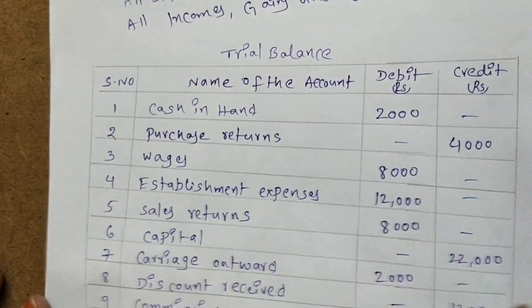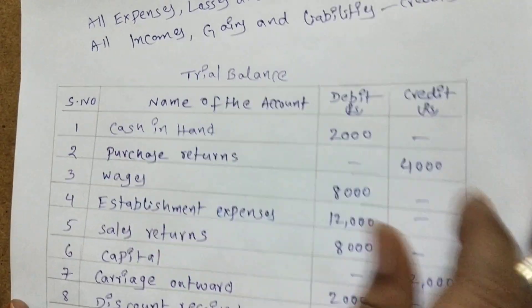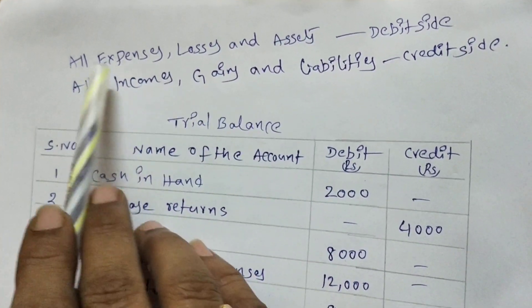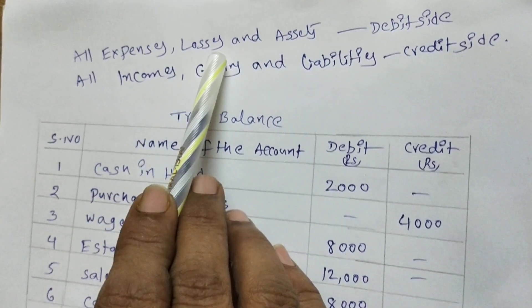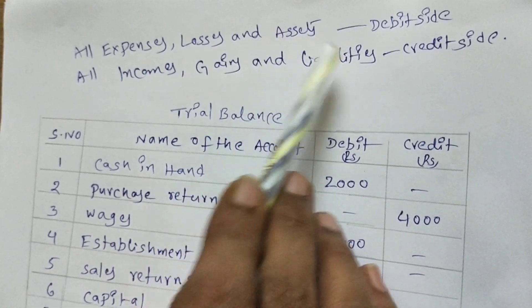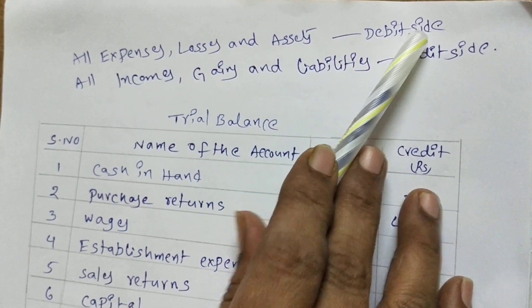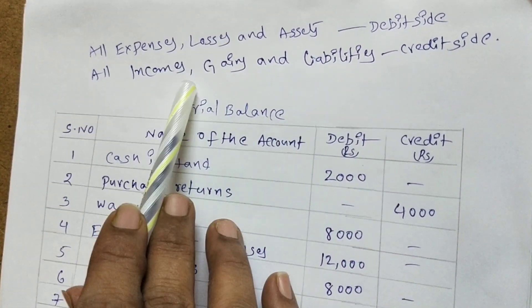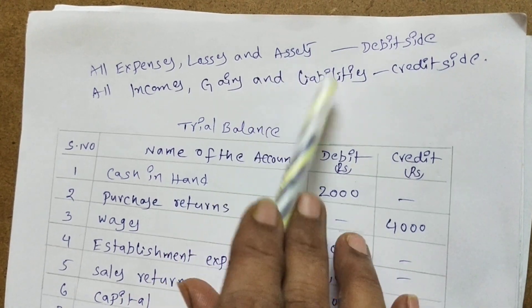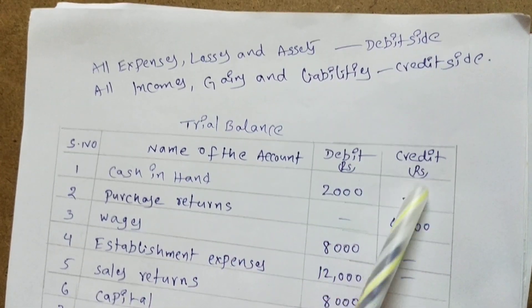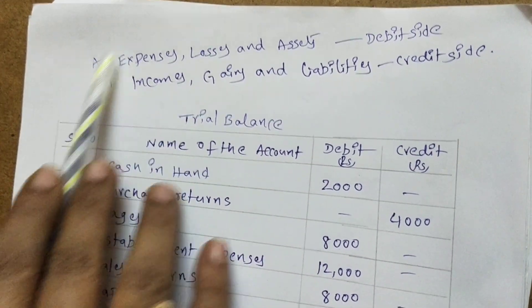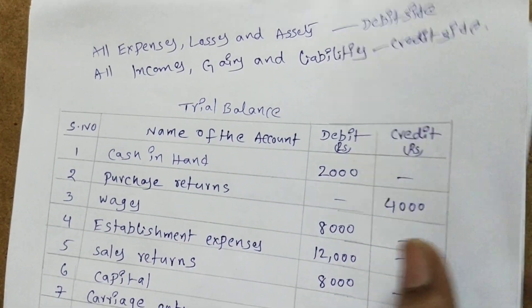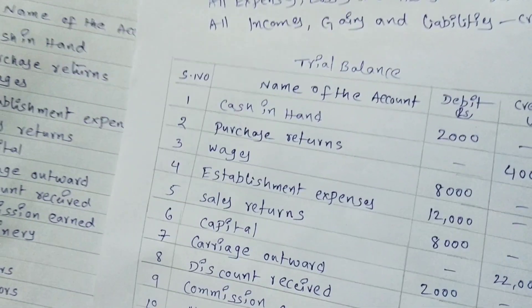There is nothing special — a simple rule is there to prepare a trial balance. Listen carefully. All expenses, losses, and assets we have to write on the debit side. All incomes, gains, and liabilities we have to write on the credit side. Only based on this rule we can easily prepare the trial balance.